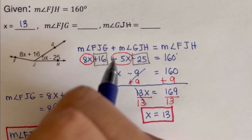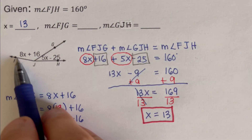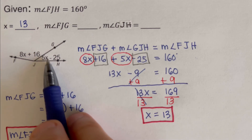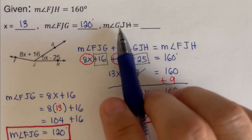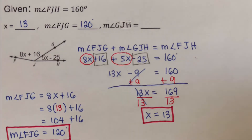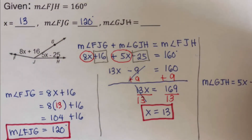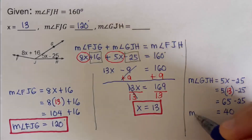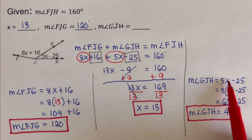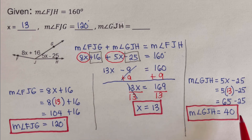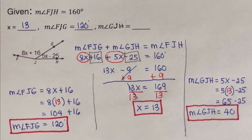Just by looking at this, we can already determine the measure of angle GJH. Since the whole thing is 160 degrees and FJG is 120 degrees, GJH should be 40 degrees. Plugging X equals 13 into 5X minus 25 confirms the measure of angle GJH is 40 degrees. This makes sense because 120 plus 40 equals 160 degrees.